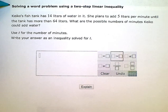Solving a word problem using a two-step linear inequality. Keiko's fish tank has 14 liters of water in it. She plans to add 5 liters per minute until the tank has more than 64 liters. What are the possible number of minutes Keiko could add water?